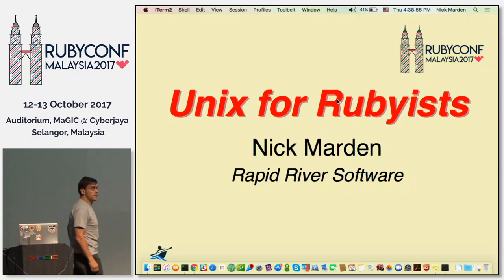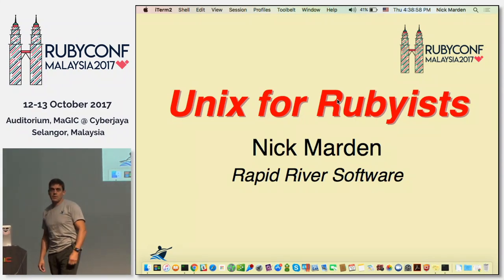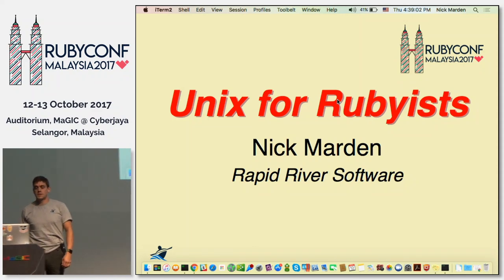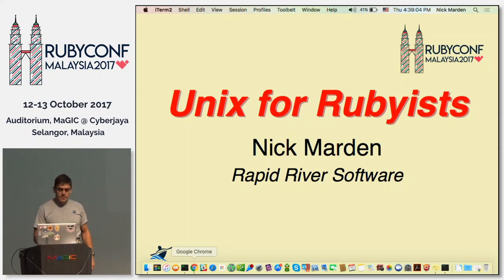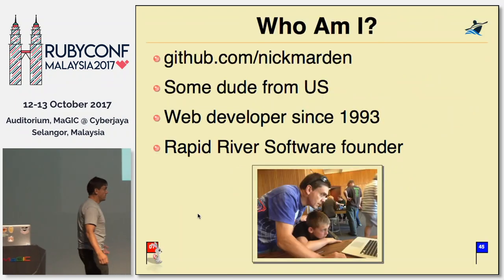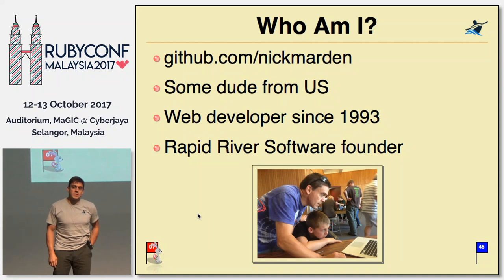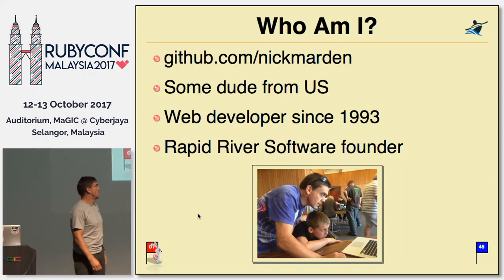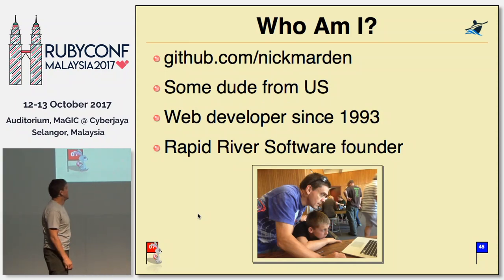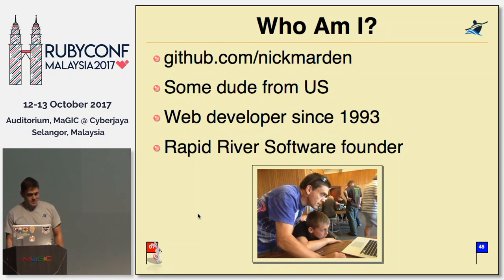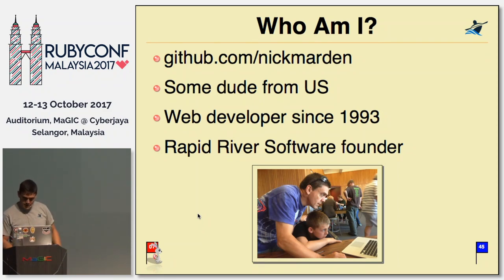My name is Nick. I'm an American. I'm one of the founders of Rapid River Software, which is based in Kuala Lumpur. We're a consultancy. On GitHub I'm Nick Martin, since 1993, which makes me pretty much almost as old as every web developer that could be. When I'm not writing software, my favorite thing to do is show other people things that I've learned about writing software. That's my son Lucas — we're building a robot here.